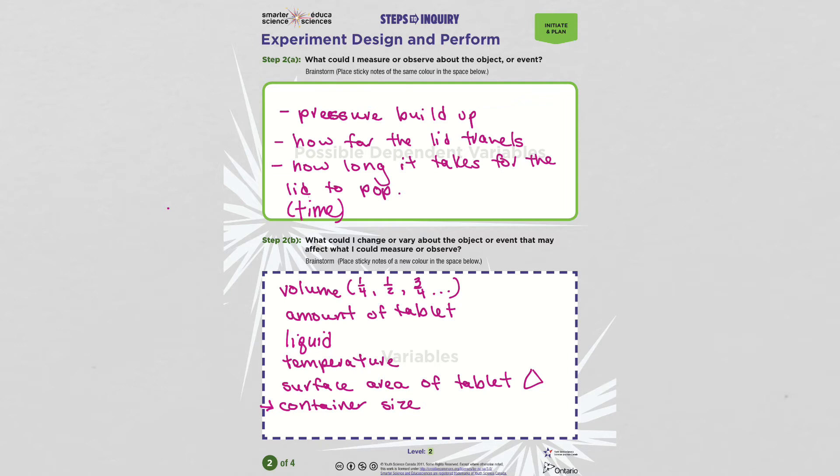I could change the liquid. I could use water or milk or vinegar or juice, try a bunch of different ones. And then I could change the temperature. I could heat the water up or I could cool it down. I could use a variety of temperatures. If I had a way of measuring the temperature, that would be better.